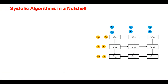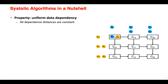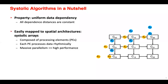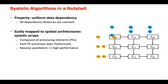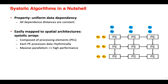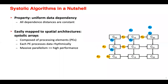Let me briefly talk about systolic algorithms. All systolic algorithms share the same property: uniform data dependency. In other words, all data dependence distances are constant. With such property, we can easily map systolic algorithms to spatial architectures, usually called systolic arrays. A systolic array is composed of processing elements, or PEs. In this systolic array, we have nine PEs in total. As can be seen in the animation, each PE processes data rhythmically, and with the massive parallelism of the systolic array, we can usually achieve high performance on hardware.